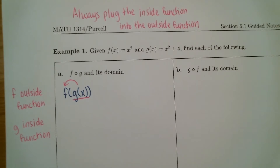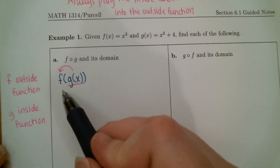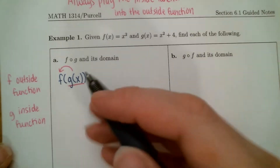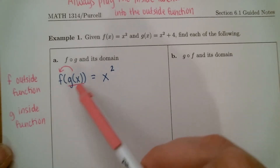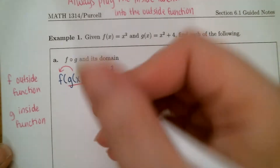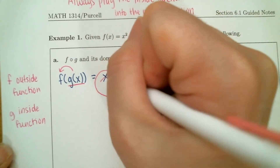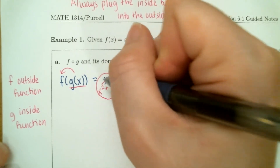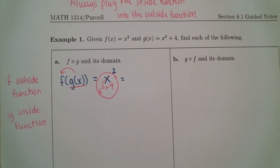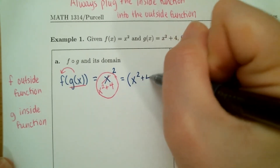What I do is: since I'm plugging into the function f, I write down the function f. Wherever you see an x, I circle it, and we are going to be replacing it with g of x. G of x is x squared plus four. The circle helps you see where you need parentheses. Instead of squaring x, we're going to be squaring the entire quantity x squared plus four. Whatever's in the circle, you need parentheses around that — so this whole quantity is getting squared.